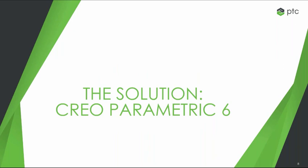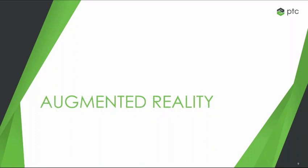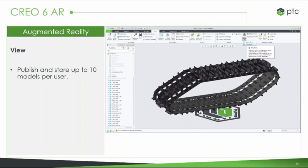This is Creo Parametric 6. It helps you blend these two worlds together, giving you an edge in the digital world. Starting with augmented reality — we have changes that make it easier to build, show, and share your product in augmented reality. In your base Creo license, you're able to publish up to 10 models at a time per user. You can publish more than that, but you can only have 10 published at a time. When a model is published, other people you've shared it with will be able to see it in augmented reality.